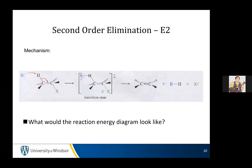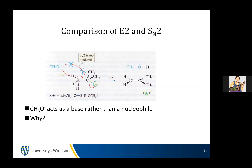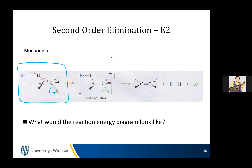Now let's compare with the E2 elimination. E2, like SN2, does not have an intermediate — everything happens at the same time in a transition state. Just like in SN2 where you had the nucleophile and leaving group acting simultaneously, in E2 all bonds are forming and breaking at the same time: the base starts interacting with the hydrogen, the hydrogen breaks its bond with the carbon, the carbon-carbon double bond starts to form, the carbon-leaving group bond starts to break. The reaction diagram looks a lot like the SN2: starting material → transition state → product.